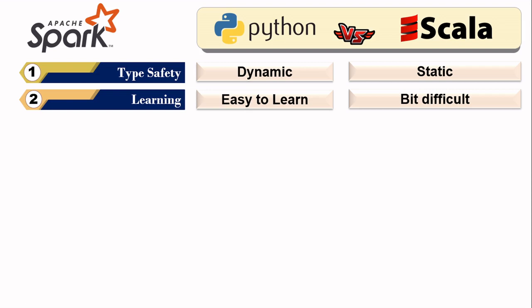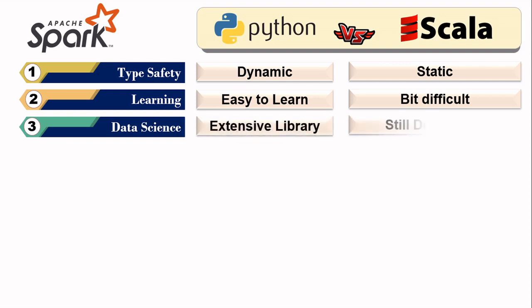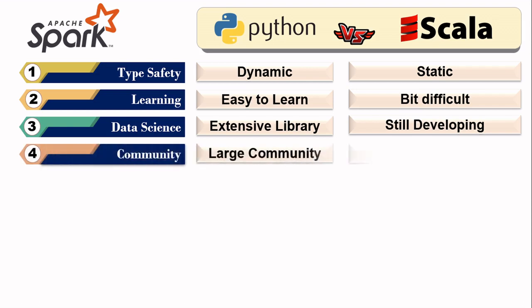For data science, Python has extensive and large libraries available, and they are easy to integrate with Spark via Python packages. Scala is still under development and has a dependency on Java SDKs.